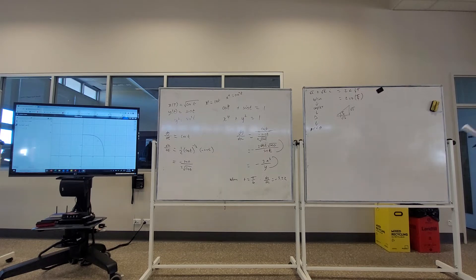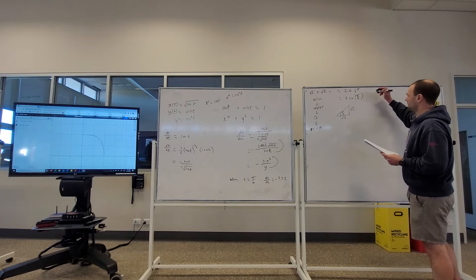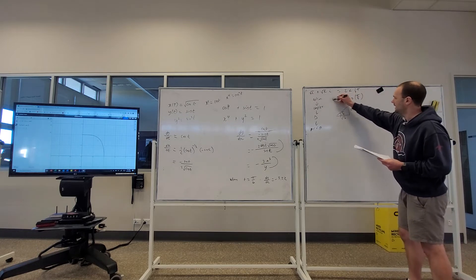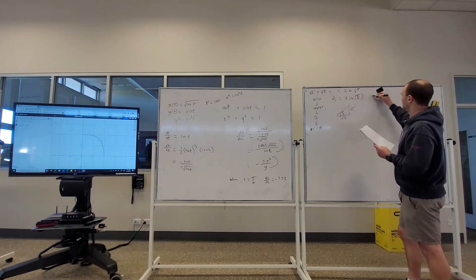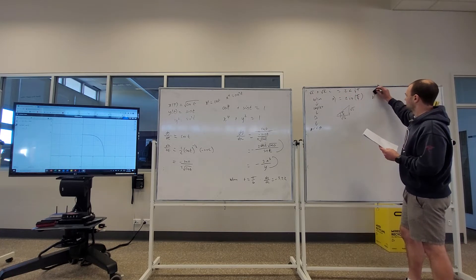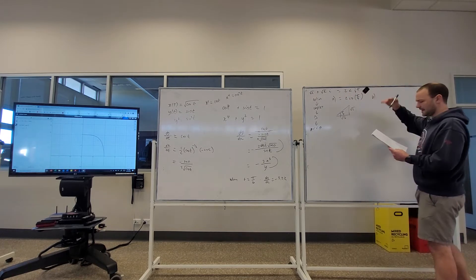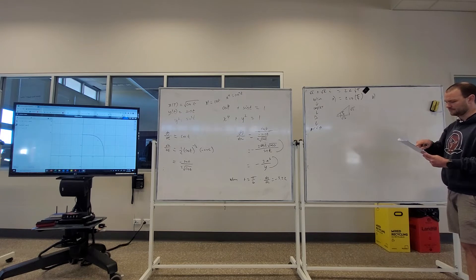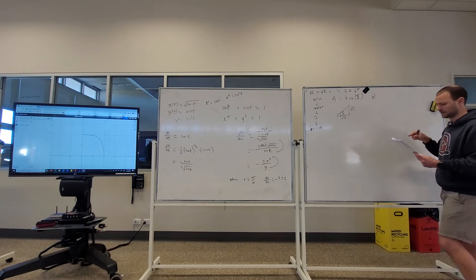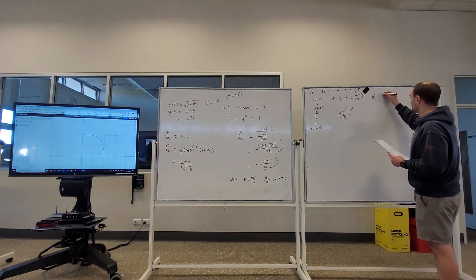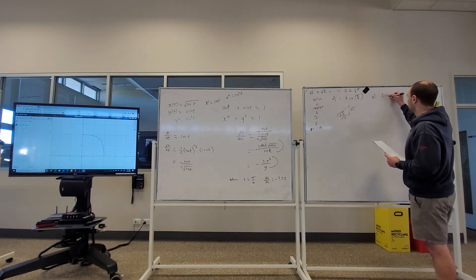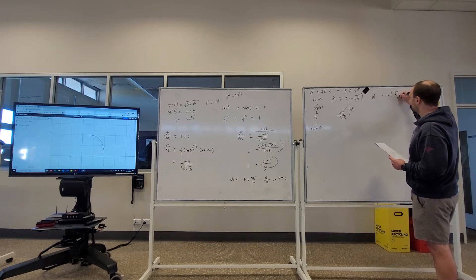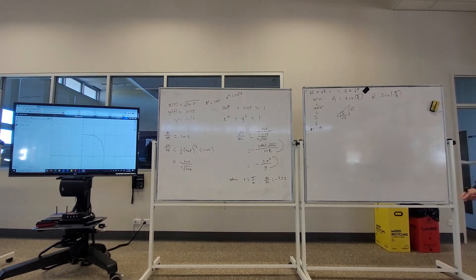The second complex number is the same except it has a negative imaginary component, giving a negative argument. So the polar form is 2 cis(−π/4). You can also obtain that from your calculator.